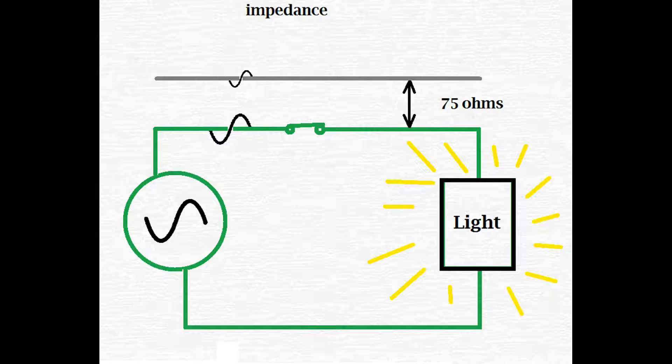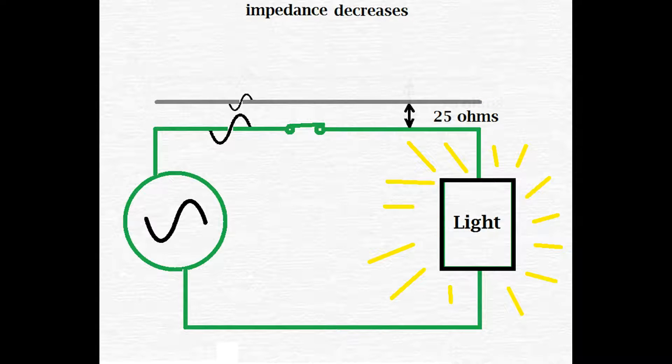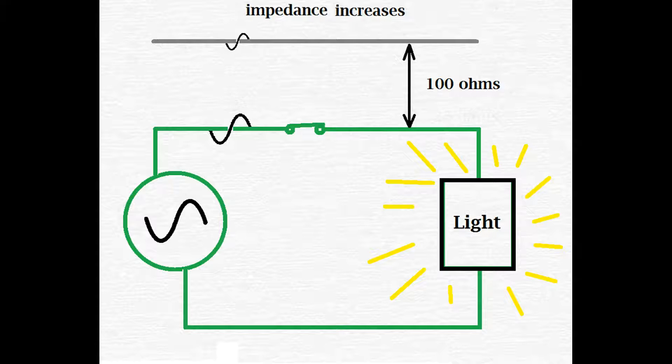So, for example, a wire this far away could have 75 ohms of impedance. Move the wire closer, and it's easier to transfer the signal, so your impedance has dropped. Vice versa, move the wire further away. It's harder to transfer your signal, so your impedance increases. What the TDR is designed to do is to measure this impedance, or the distance the wires are apart from each other.